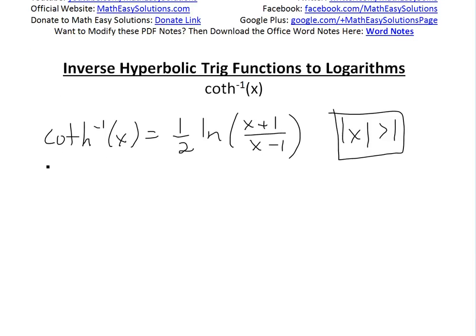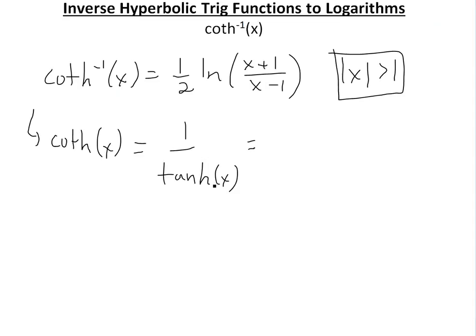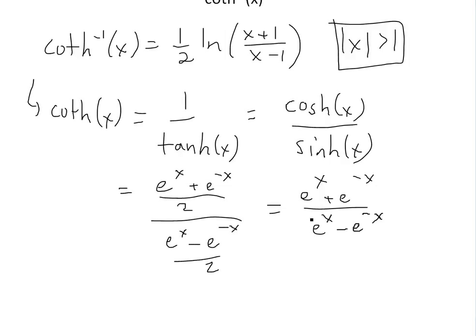Before I prove this, I want to point out that the hyperbolic cotangent of x — not the inverse, just the regular — by definition is equal to 1 divided by hyperbolic tan of x, which equals hyperbolic cosine of x divided by hyperbolic sine of x. Writing out those definitions, we get (e^x + e^(-x))/2 divided by (e^x - e^(-x))/2. The 2s cancel, leaving (e^x + e^(-x)) / (e^x - e^(-x)).